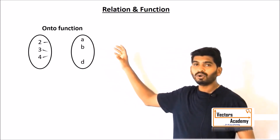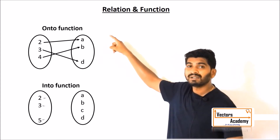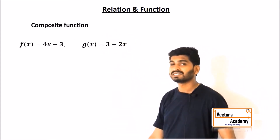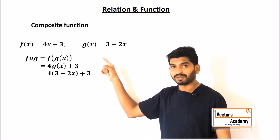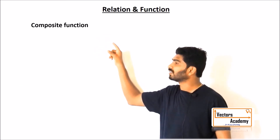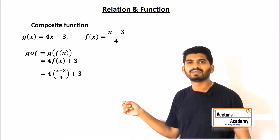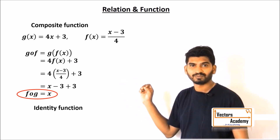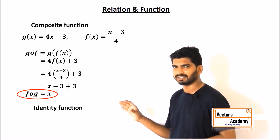What is an onto function? An onto function is one in which none of the elements in the range are left out — all elements in the range are covered. If any elements remain in the range without being mapped to, it is called an into function. So these are the four basic types of functions: one-one, many-one, onto, and into.